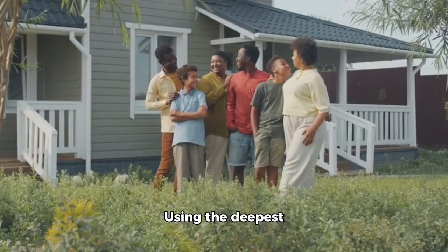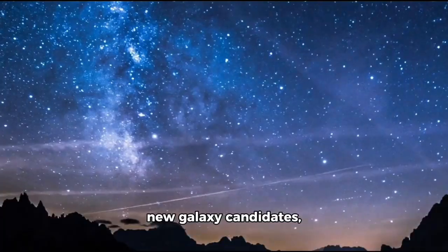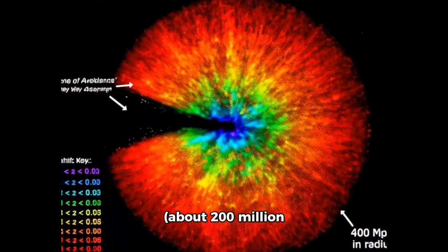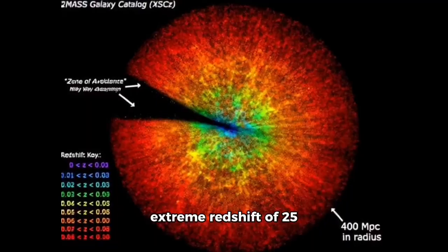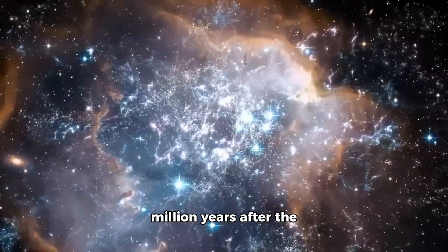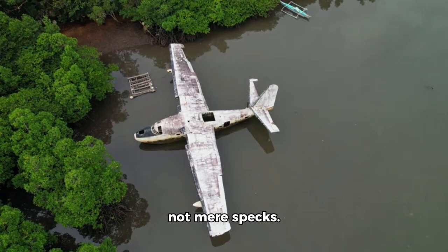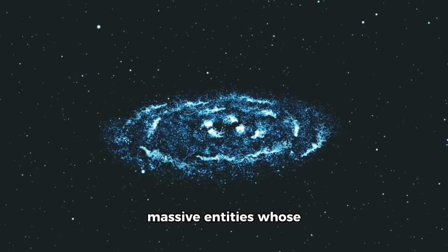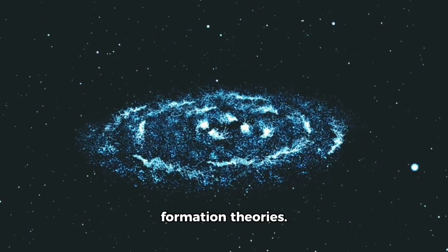Using the deepest surveys, scientists have discovered nine new galaxy candidates, six at a redshift of 17, about 200 million years after the Big Bang, and three at an extreme redshift of 25, possibly just 100 million years after the universe began. These objects are not mere specks. They are luminous, massive entities whose existence challenges conventional galaxy formation theories.